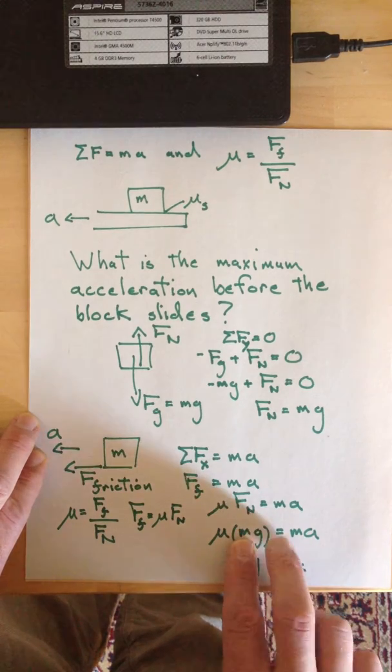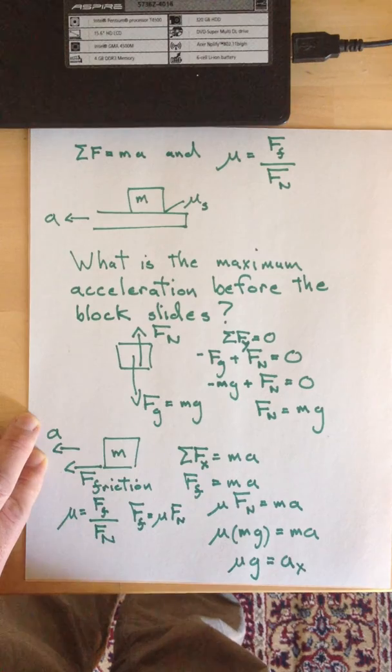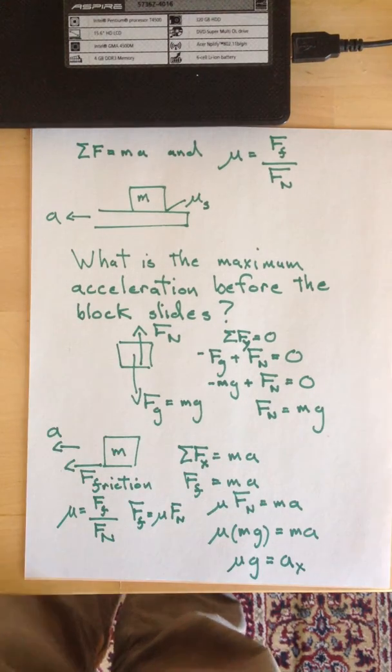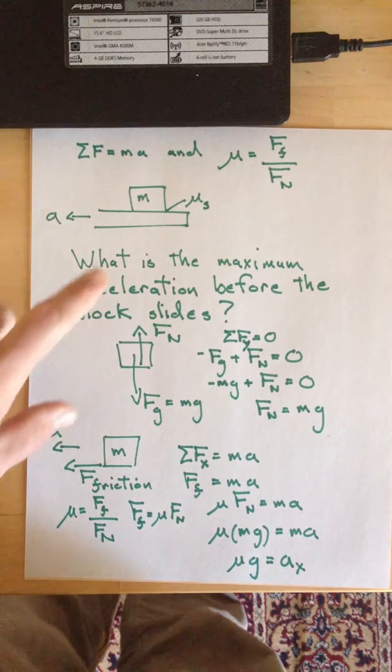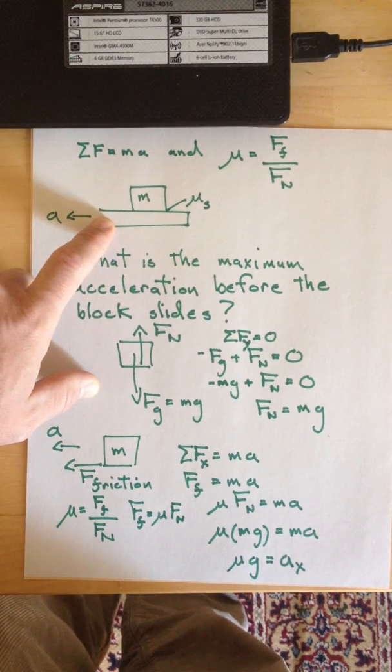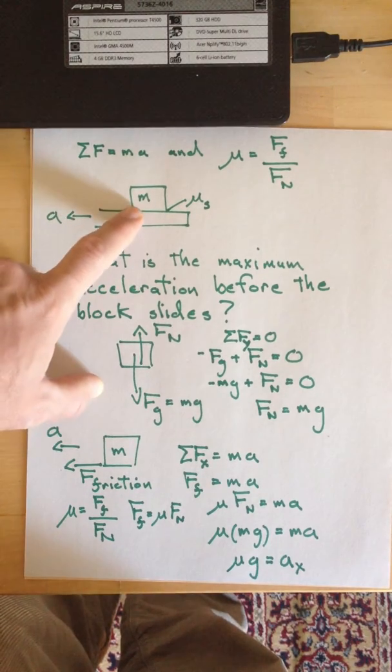And how about this? Mass is on the left-hand side, mass is on the right-hand side. That means you can divide both sides by the mass, and that means the maximum acceleration of this surface has nothing to do with the mass that's sitting on it.